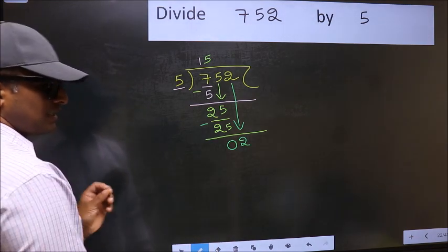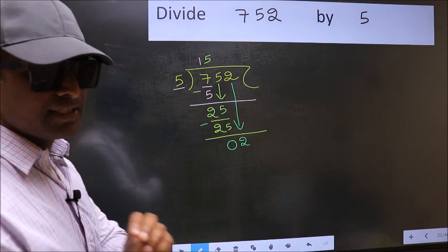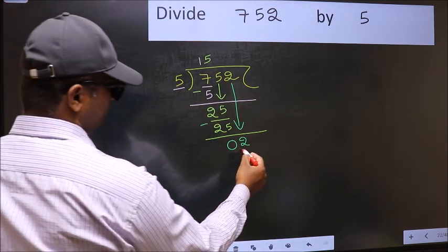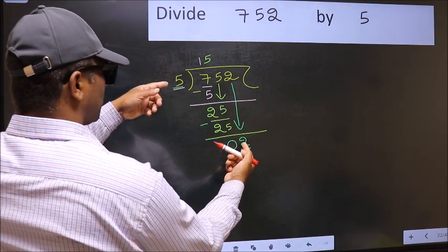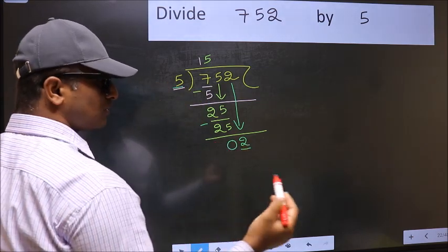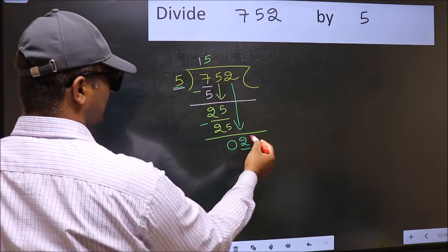After this step, the mistake happens. And the mistake is this. Here we have 2, and here 5. 2 is smaller than 5. So what many do is they directly put dot and take 0.